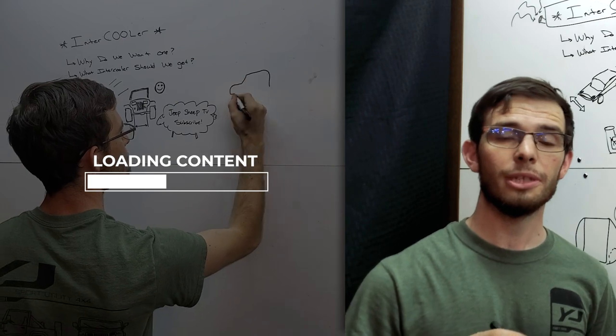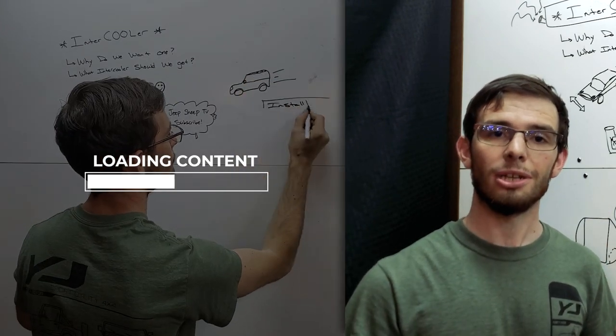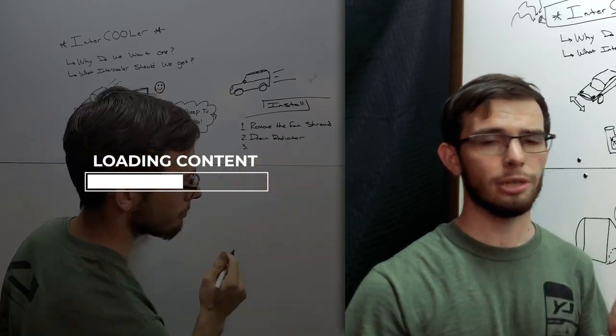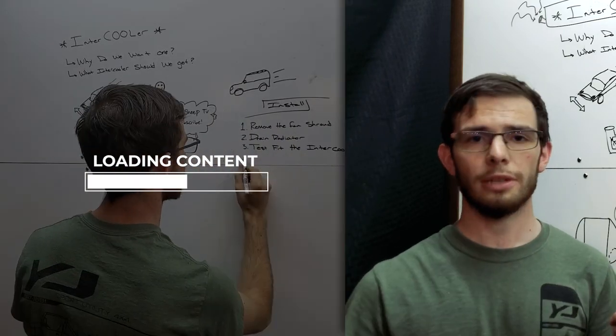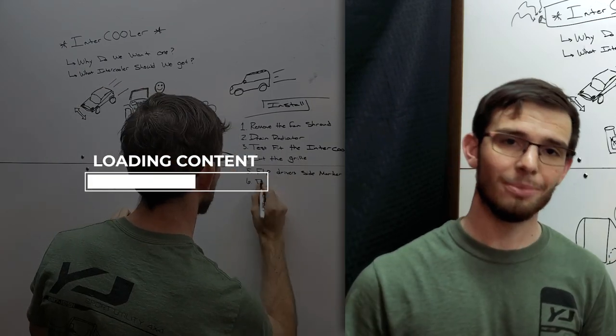So with that being said, I have a 1994 YJ. Some of you have TJs, some of you have earlier YJs, some of you have Cherokees and Comanches and Dodge Durangos, all with this engine. And none of these things are going to be exactly the same.